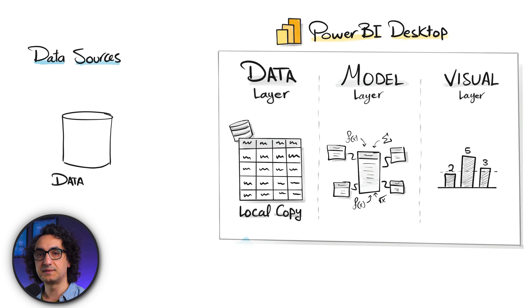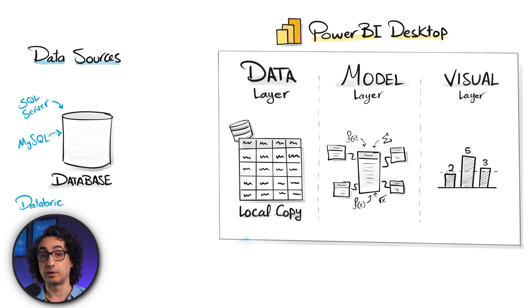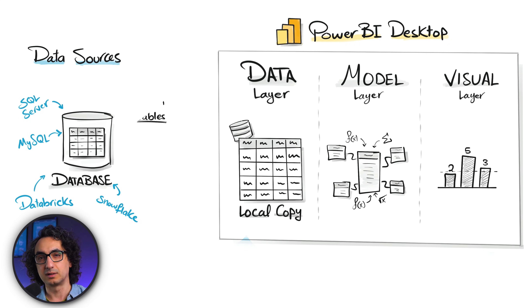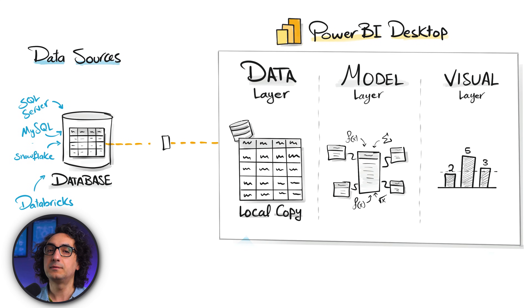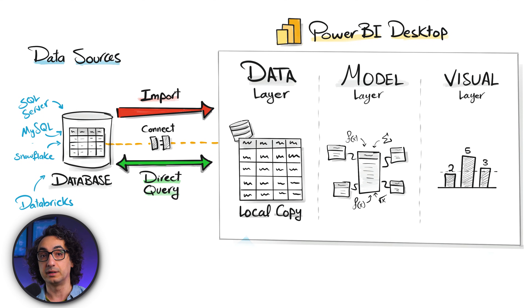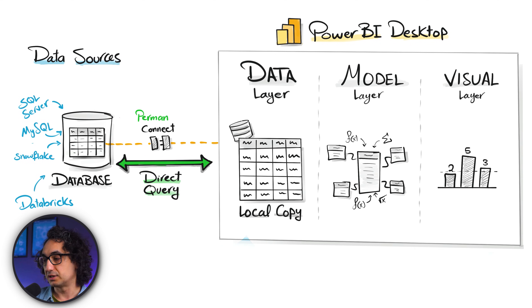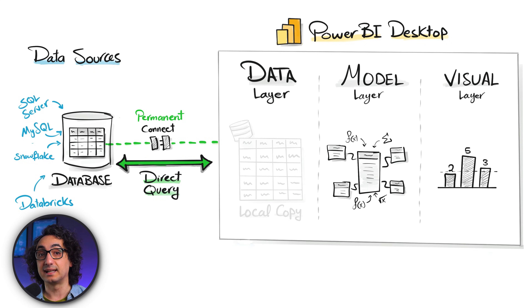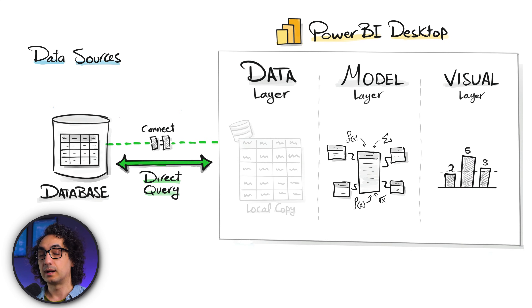Let's understand what this means behind the scenes by going to our high-level architecture. Your data lives inside databases — SQL Server, PostgreSQL, MySQL, or modern platforms like Databricks or Snowflake — inside something called tables. If you want to analyze this data in Power BI, you can use Import, which loads the data from the database tables into Power BI. But Power BI also gives you a second option called Direct Query: it keeps a permanent connection to the database and does not load a copy of the data inside Power BI.